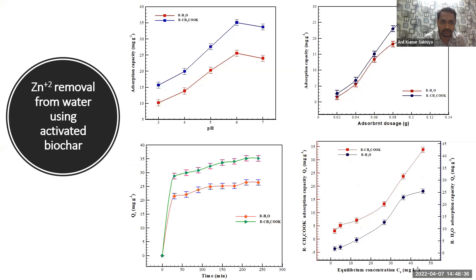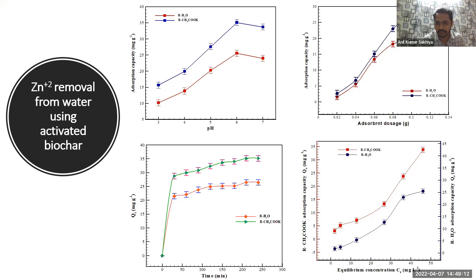There is a zinc metal contamination problem in the states of Punjab and Haryana, so we targeted zinc for removal from water. We assessed different process parameters such as pH, adsorbent dose, contact time, and initial metal concentration. Based on the results, we concluded that a maximum adsorption capacity of 35 mg/g was achieved with chemical activation, and approximately 17 mg/g with steam activation.